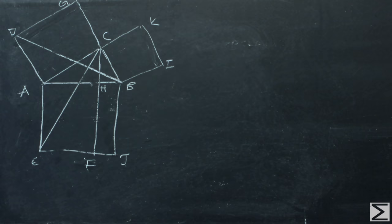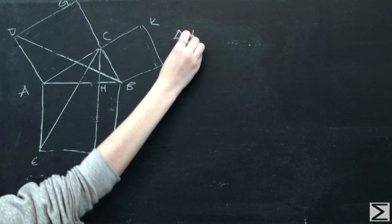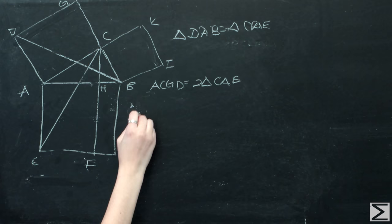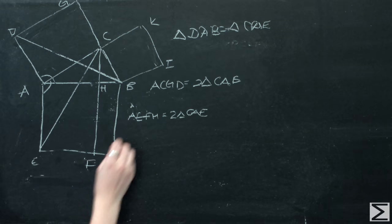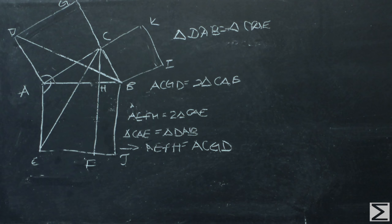We can draw an altitude CF and lines DB and CE, and we can see that triangle DAB is equal to triangle CAE. We can see that the square ACGD is twice that of triangle DAB because they have the same base AD, and they have the same height as they are between two parallel lines DA and GB. The rectangle AEFH is twice triangle CAE because they share the same base and height between two parallel lines FC and EA. Since triangle CAE is equal to triangle DAB, then AEFH is equal to ACGD.